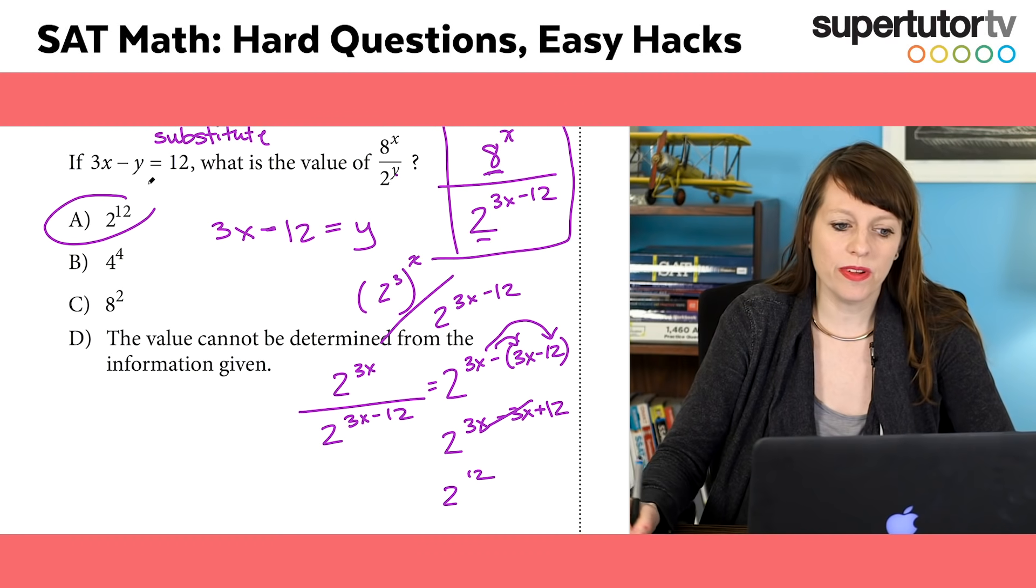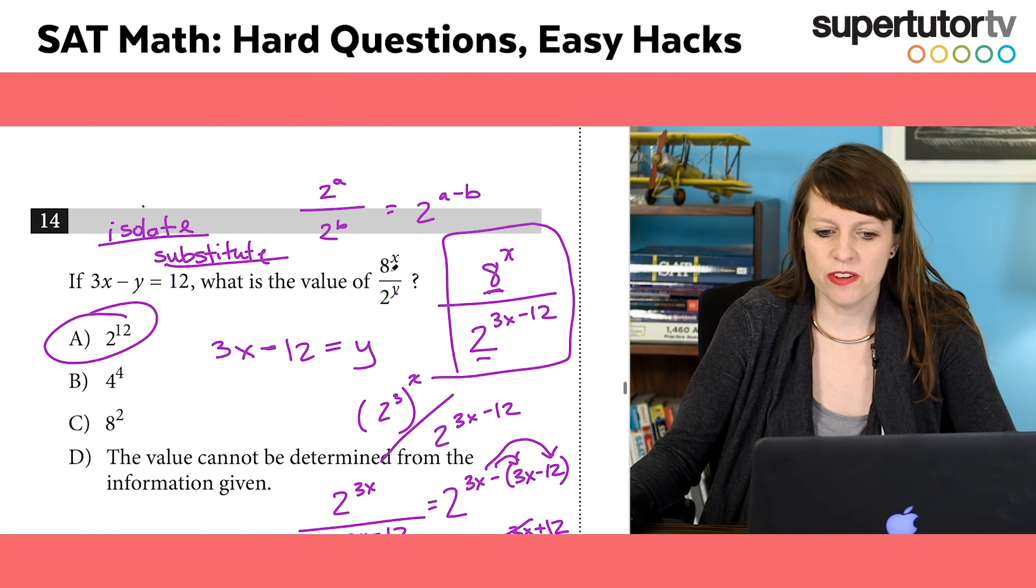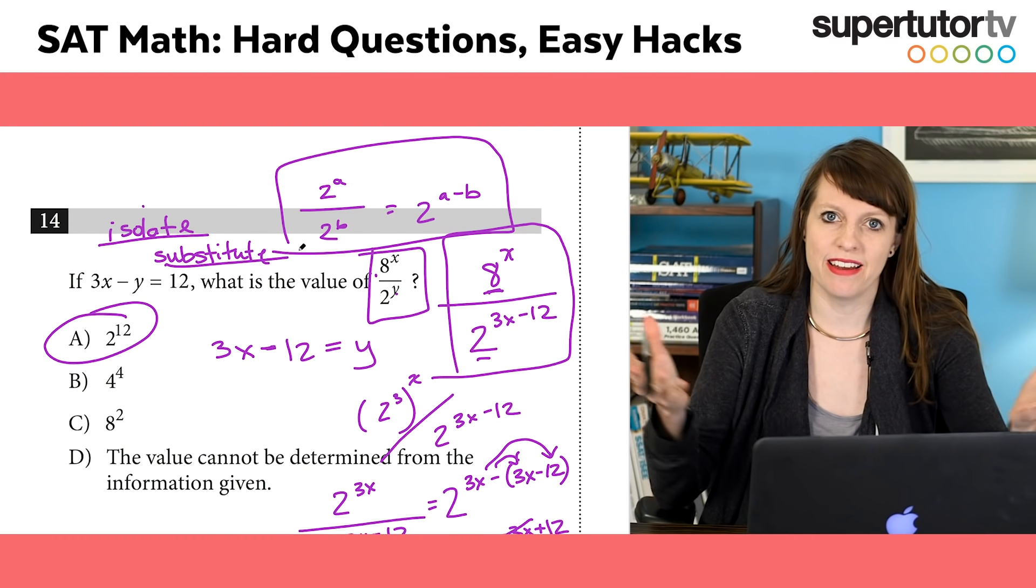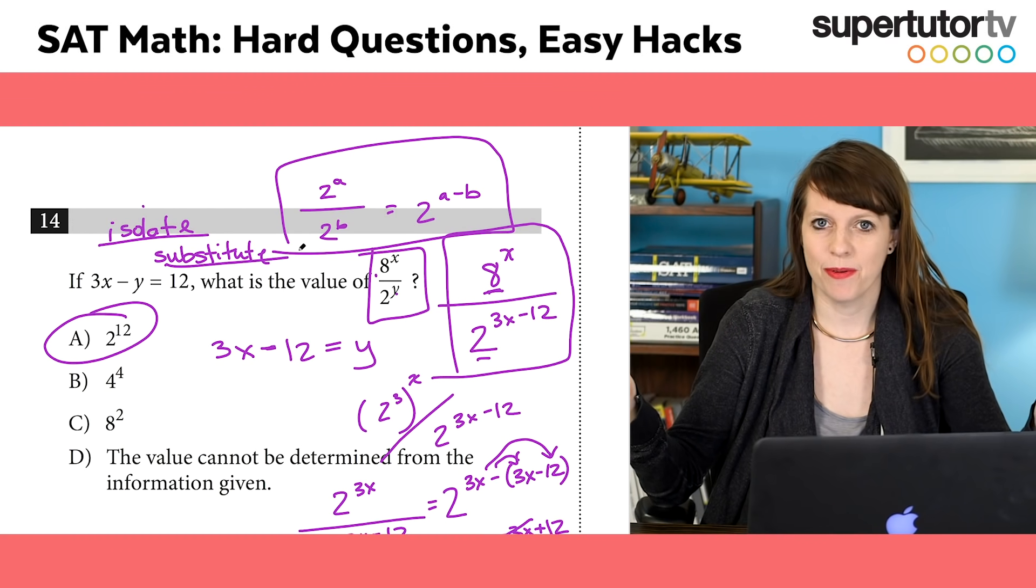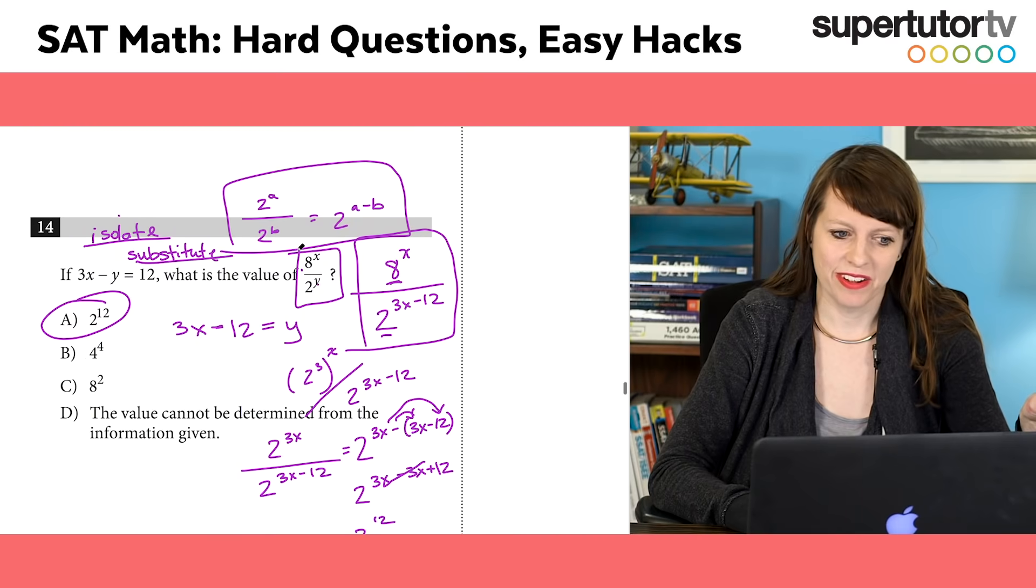Cool? So this might look hard, it really is not that hard, it's pretty easy. I isolate, I substitute, I then use the idea of make your bases look alike, and then I apply an exponent rule. Done. Easy. I could do it probably really fast if I wanted to. But now you know how to do it really fast.